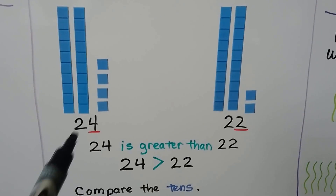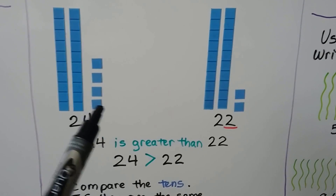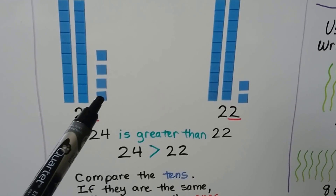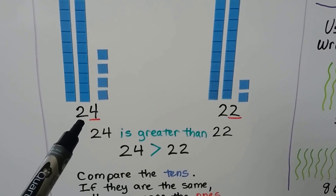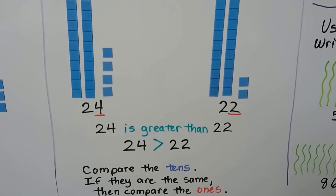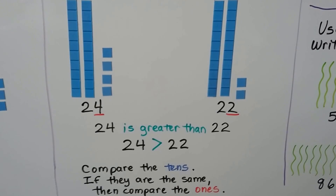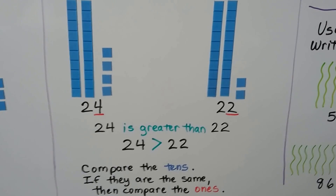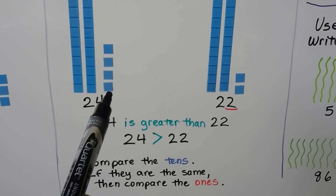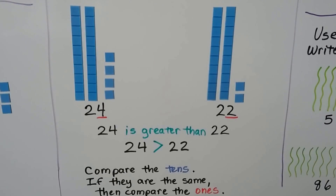Here we have two tens and here we have two tens. We have four ones and here we have two ones. Four ones is more than two ones, so 24 is greater than 22. We compare the tens; if they are the same, then compare the ones. We can see four is more than two, so we know 24 is greater than 22.